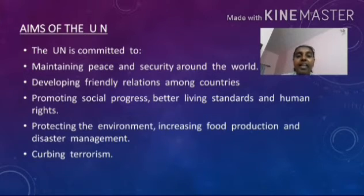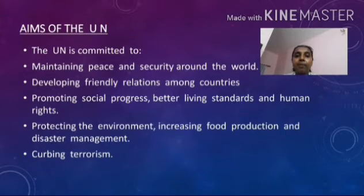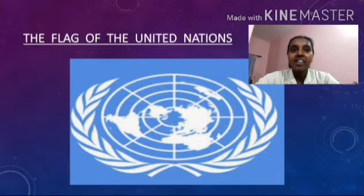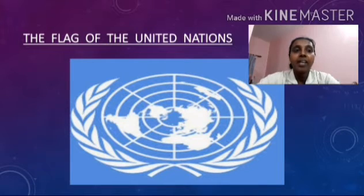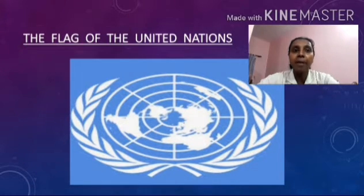Further aims include protecting the environment, increasing food production and disaster management, and curbing terrorism. Curbing means something that limits or restrains. Looking at the flag of the United Nations, the UN works towards the peace and security of the people of the world, as represented by the world map at the center of the flag. The olive branches represent peace in the world.